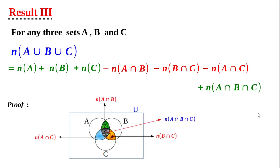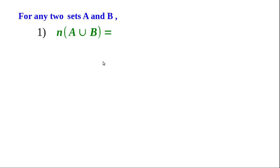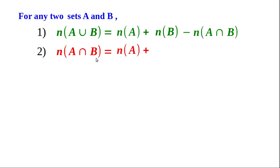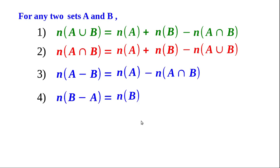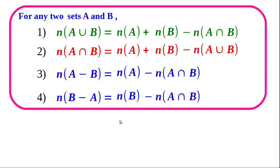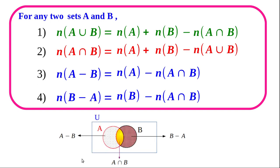These are the four important results: (1) n(A∪B) = n(A) + n(B) - n(A∩B); (2) n(A∩B) = n(A) + n(B) - n(A∪B); (3) n(A-B) = n(A) - n(A∩B); (4) n(B-A) = n(B) - n(A∩B). These four results can be verified using the Venn diagram. Draw the Venn diagram also.